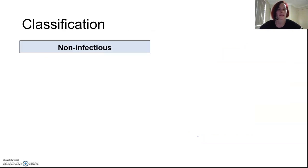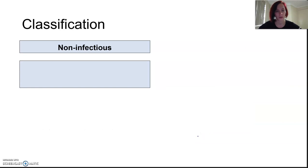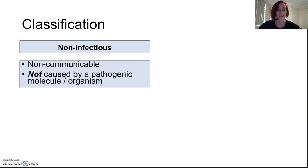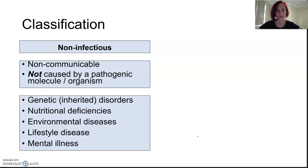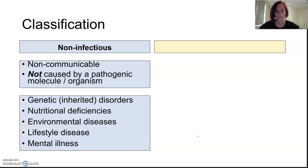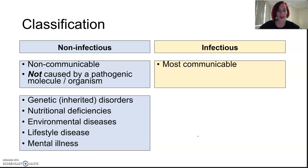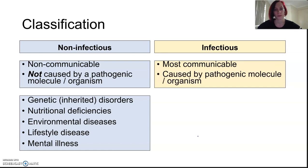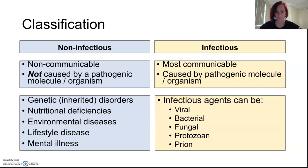We can classify things as non-infectious and infectious, and that's where we're focusing today. Non-infectious diseases are non-contagious and are not caused by pathogenic organisms or molecules — genetic, nutritional, and environmental causes. Infectious diseases, most of them contagious, are all caused by pathogenic molecules or organisms — and that includes viruses, since a virus is a molecule. These infectious agents can be viral, bacterial, fungal, protozoan, and prions. We'll talk about them later in the unit.